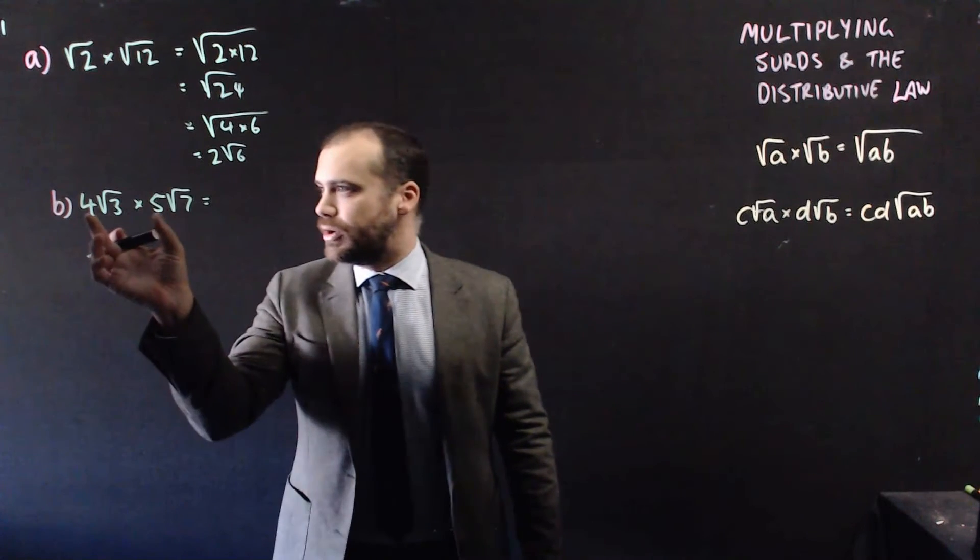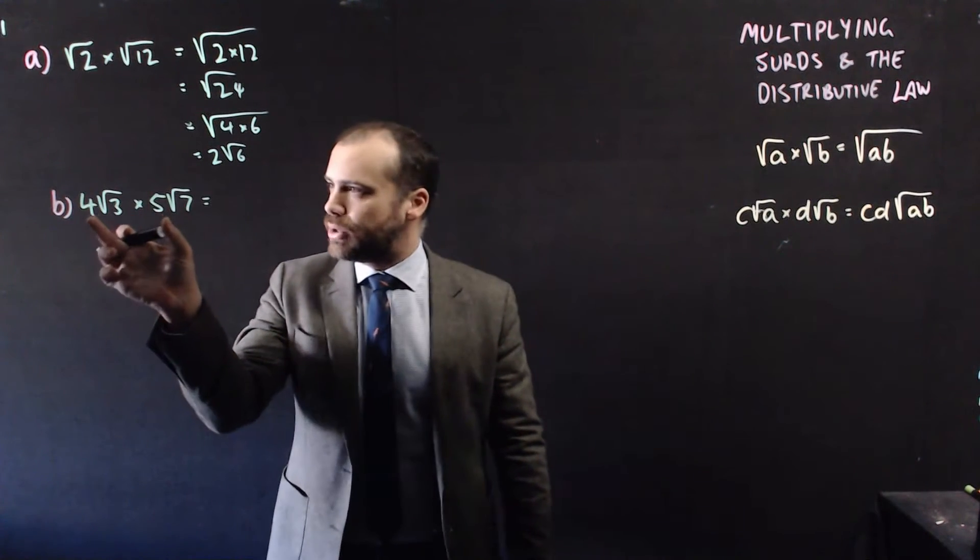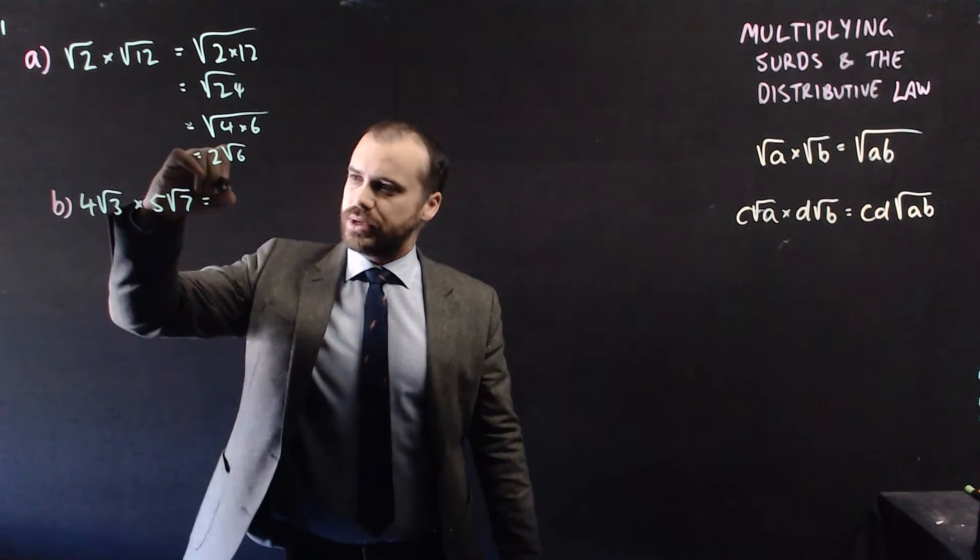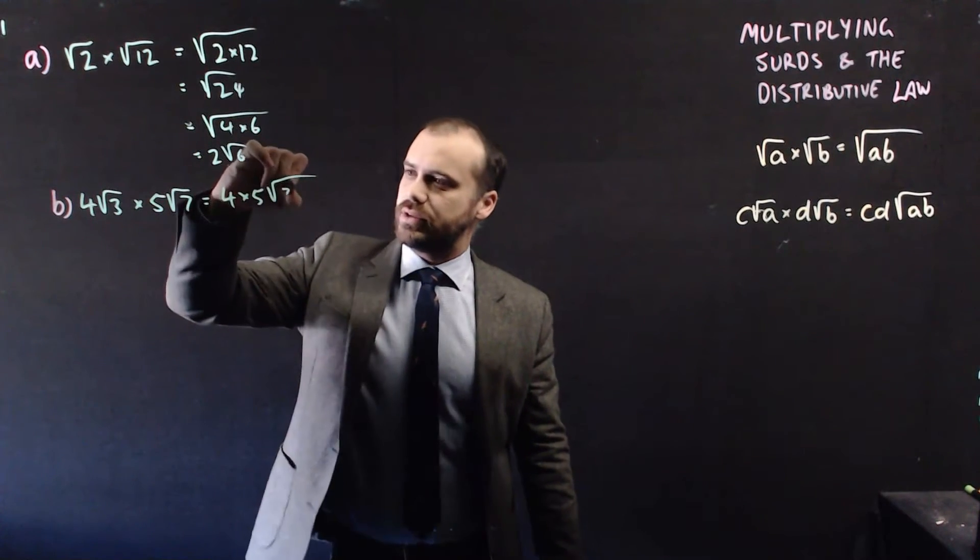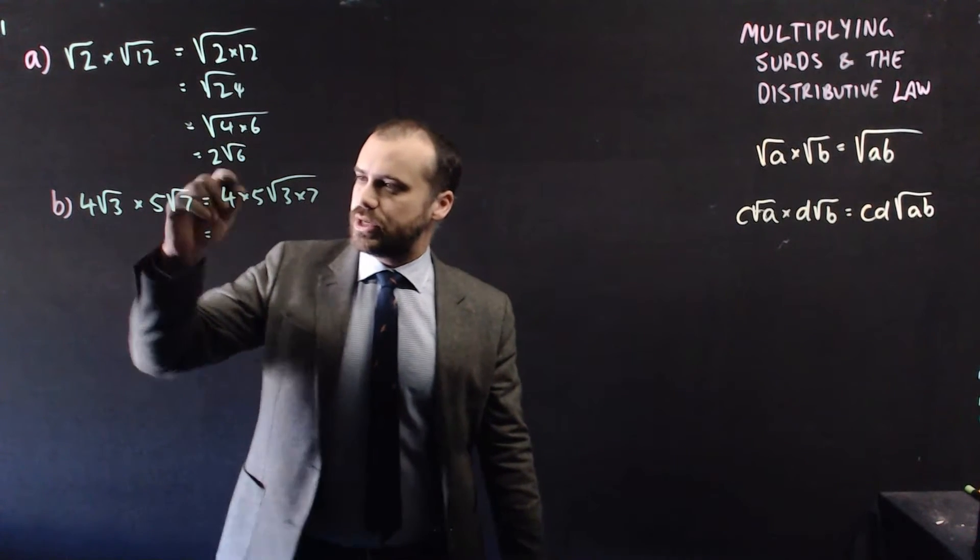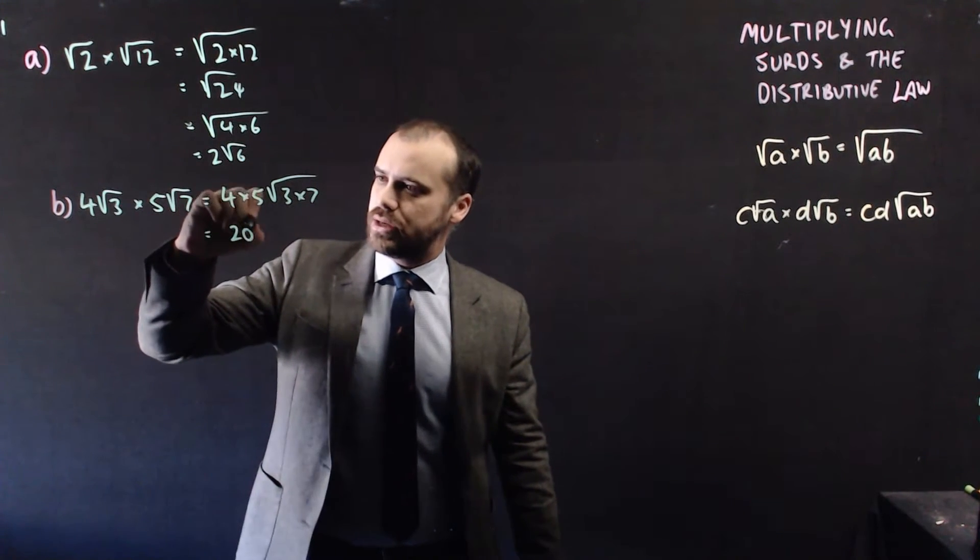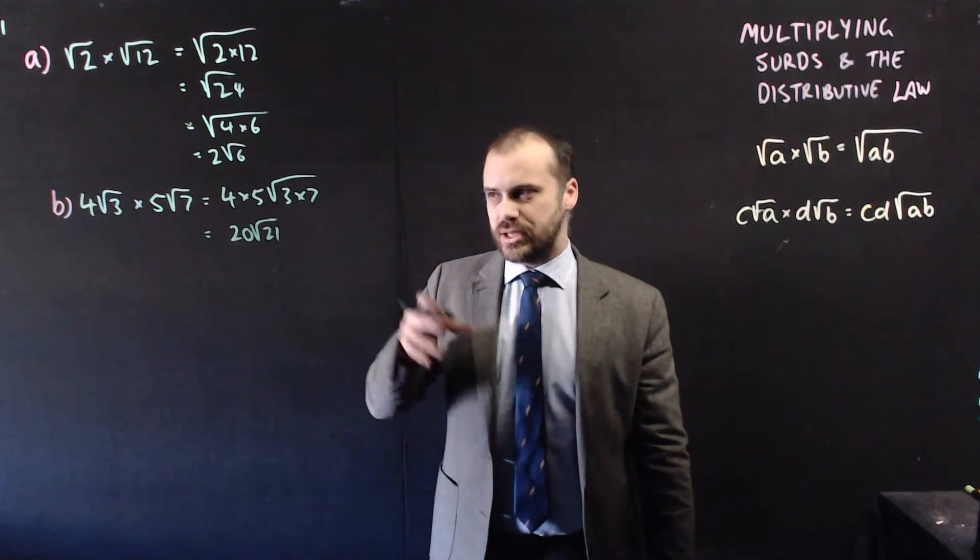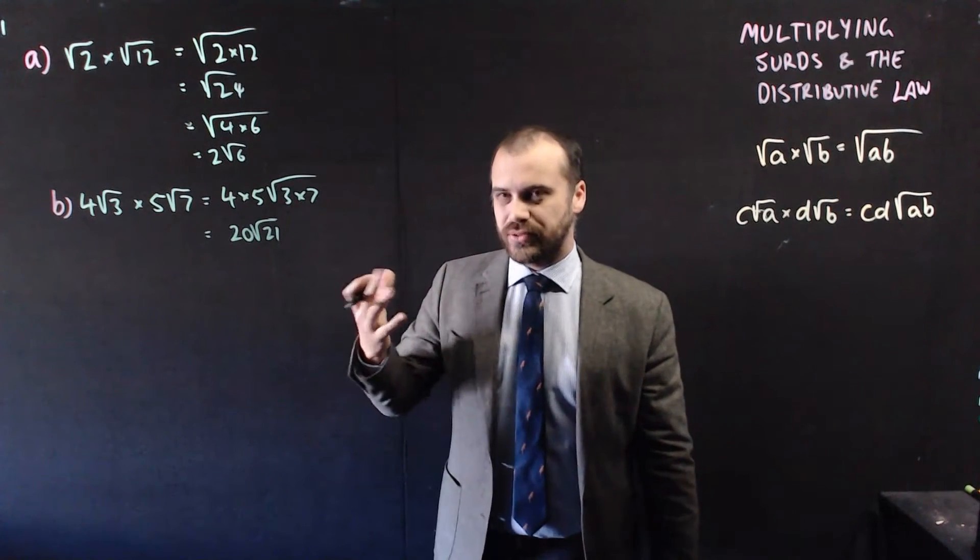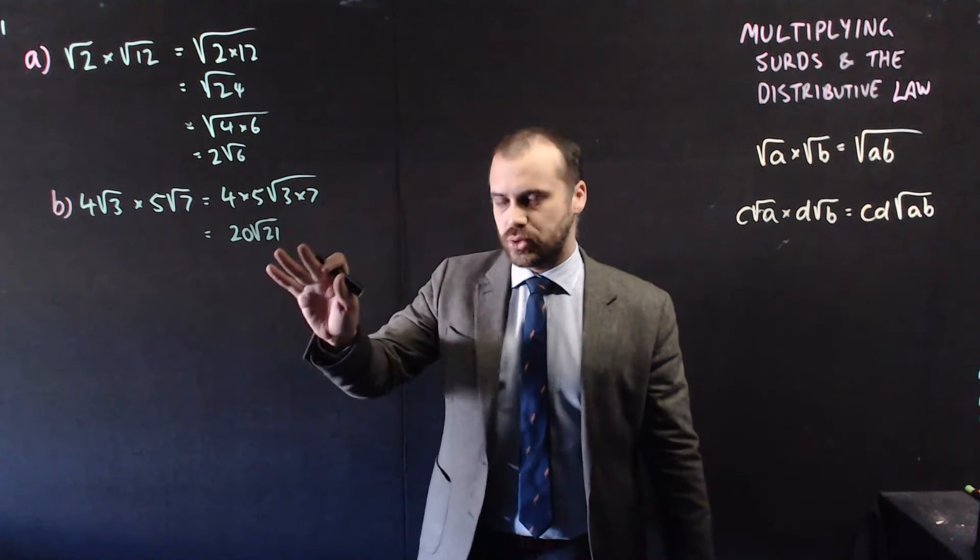Our second example here, 4 root 3 times 5 root 7. We multiply the bits outside, so we get 4 times 5 root 3 times 7, which is going to be 4 times 5, which is 20 root 21. And then you really need to ask yourself, does 21 can that be simplified? I don't think it can. 20 root 21.